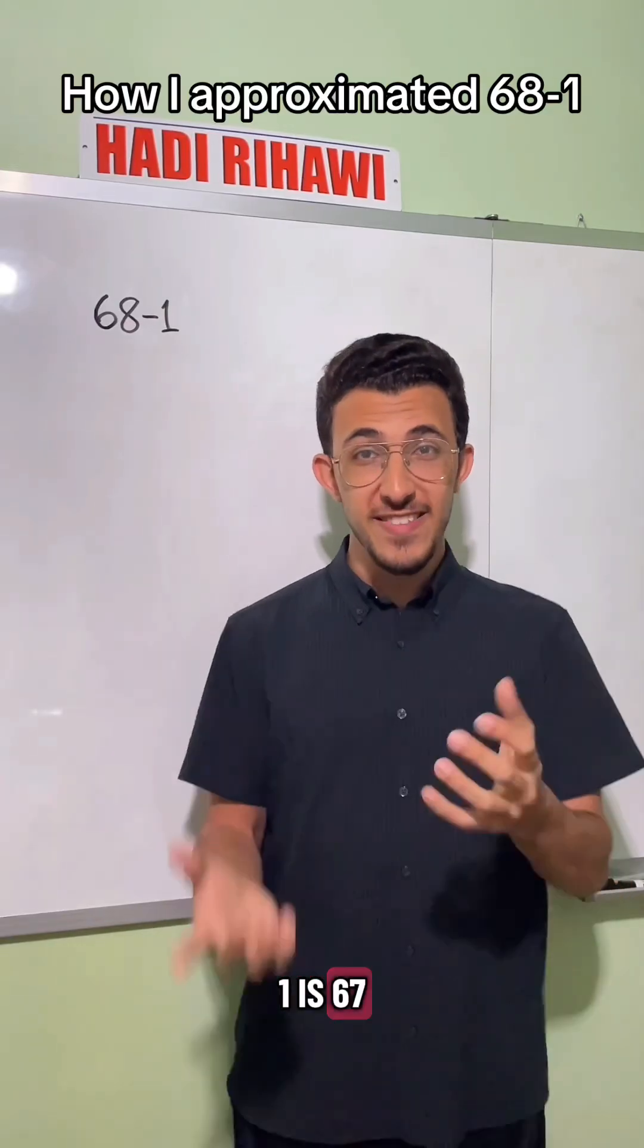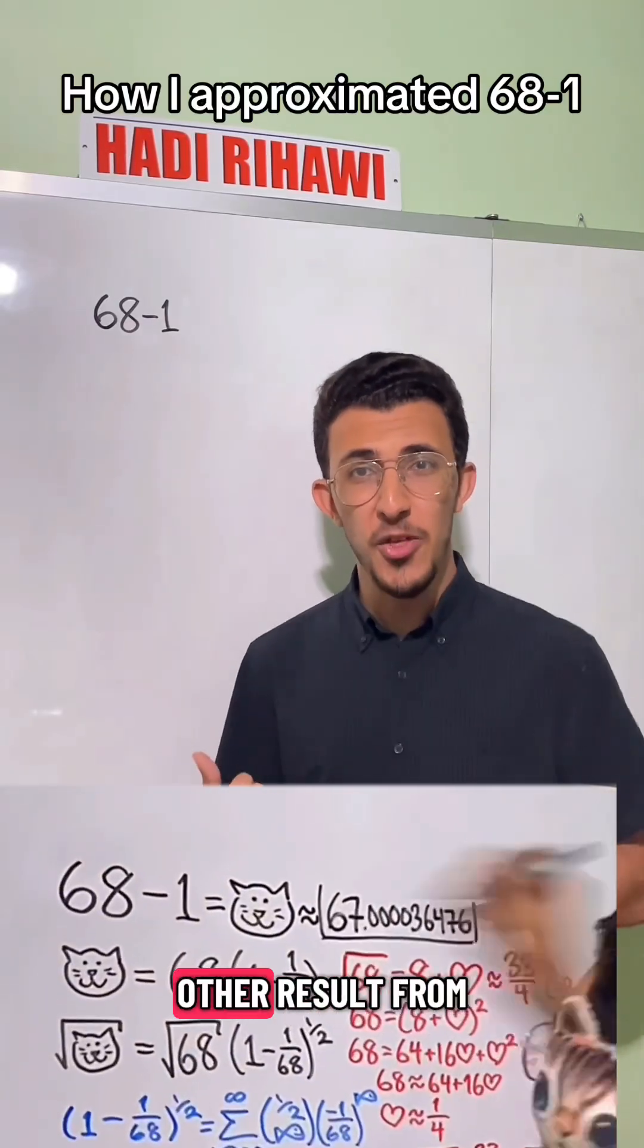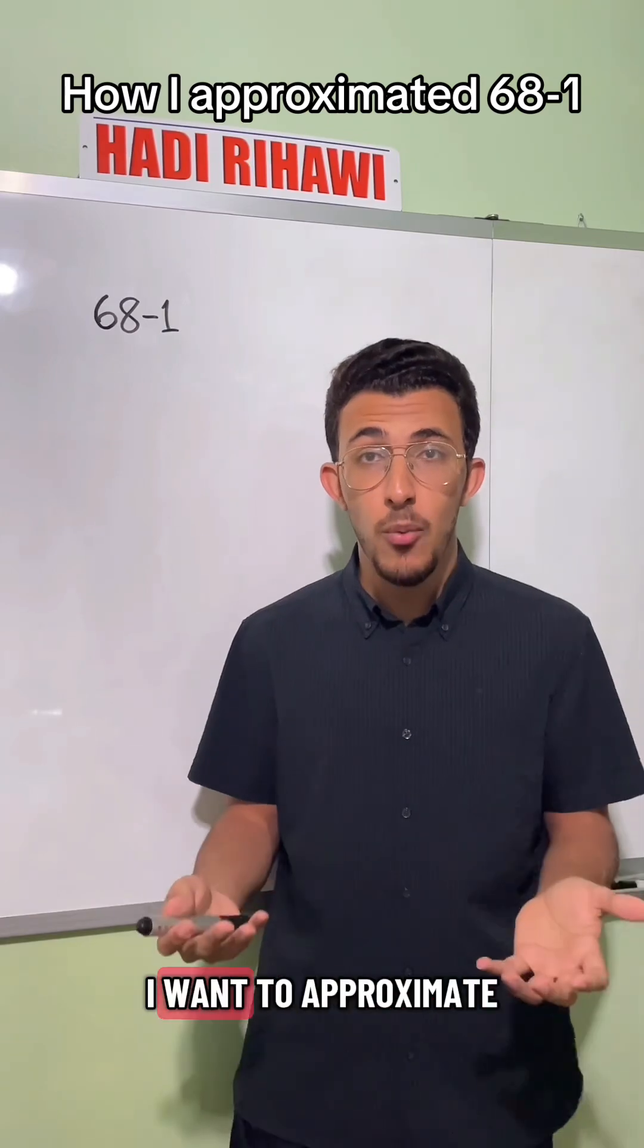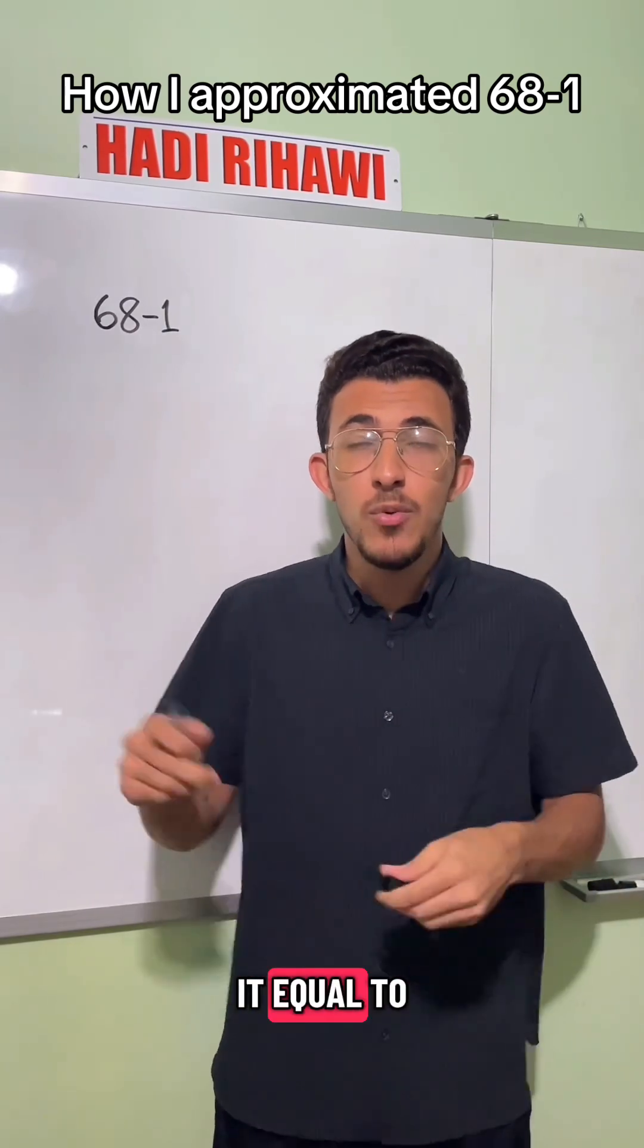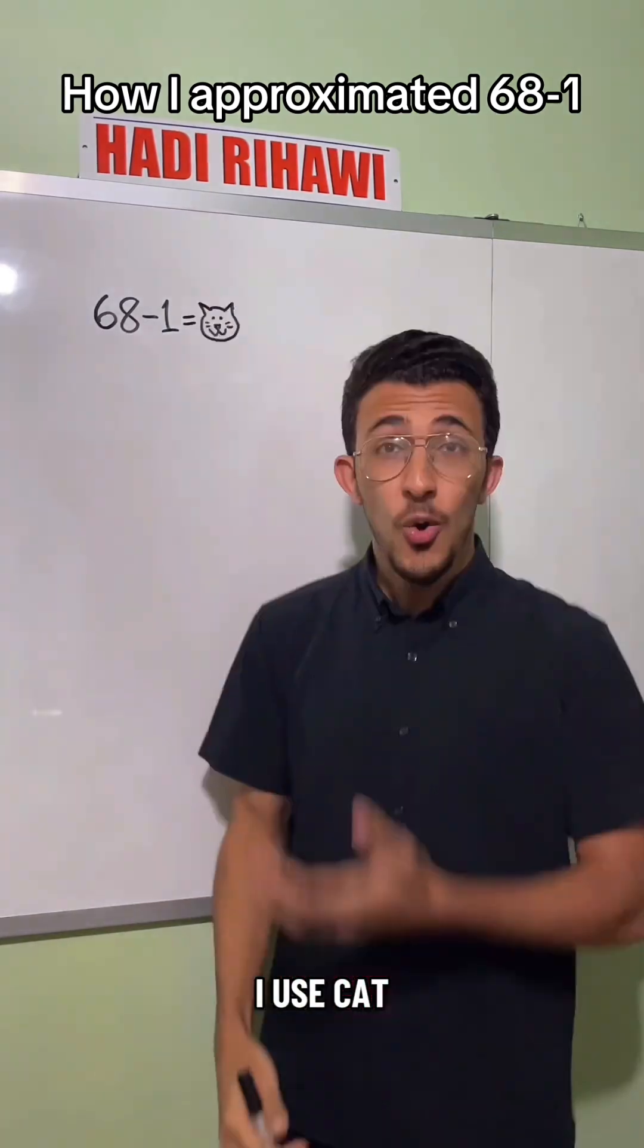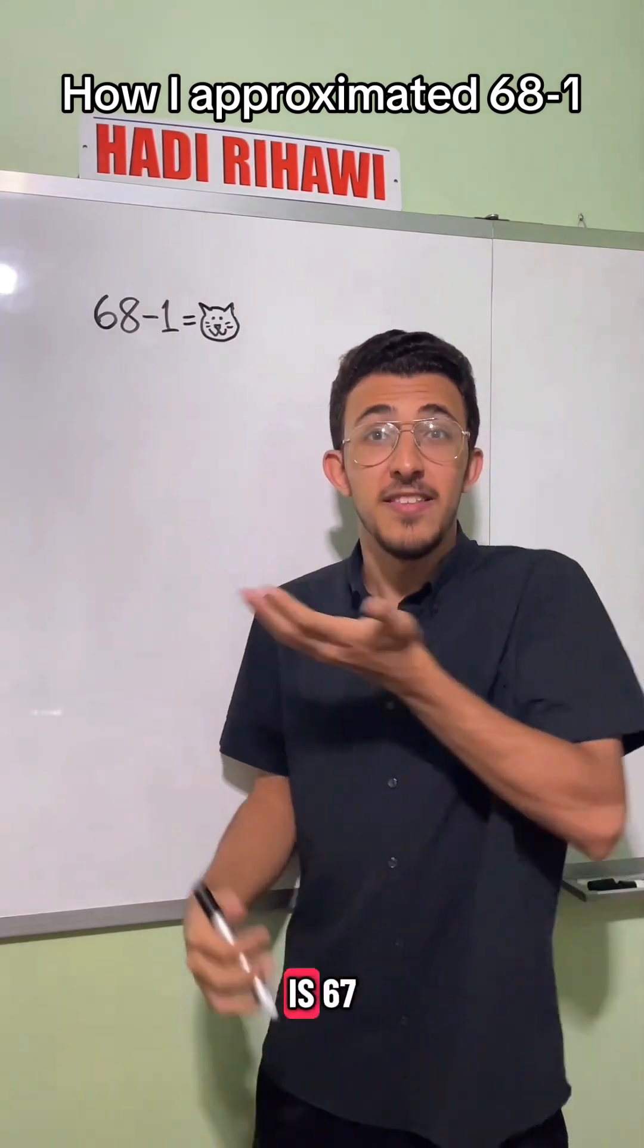We all know that 68 minus 1 is 67, but where did I get this other result from? To keep track of the number I want to approximate, I first set it equal to a variable, which is why I use cat. We know here that the exact value of cat is 67.